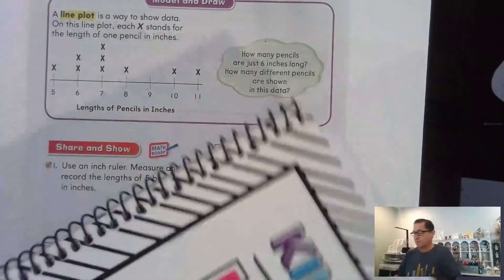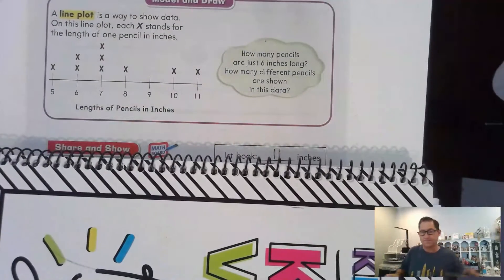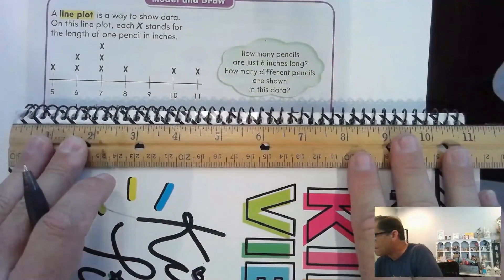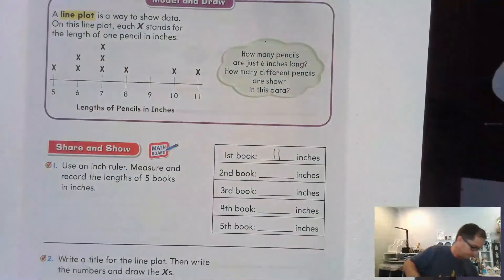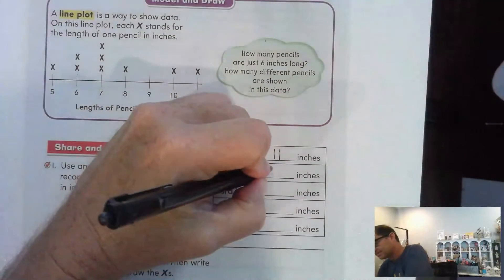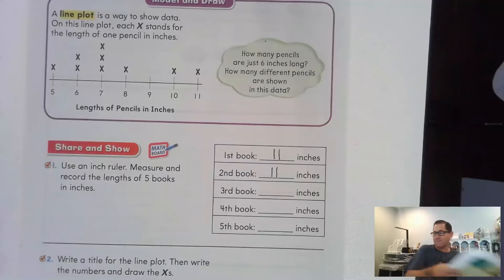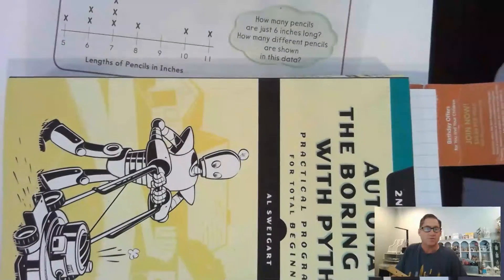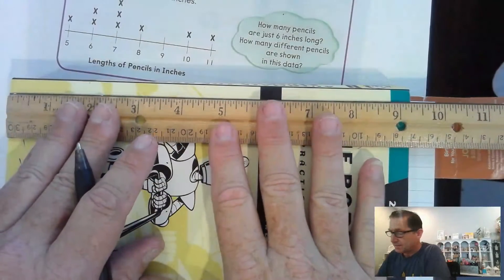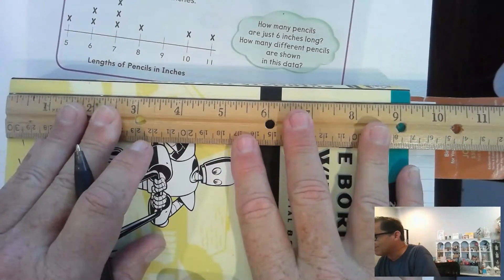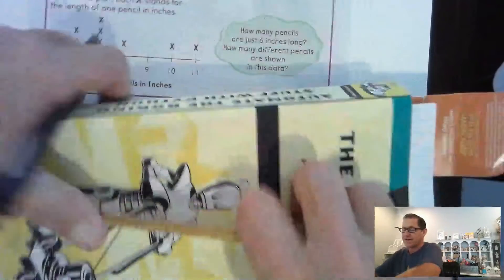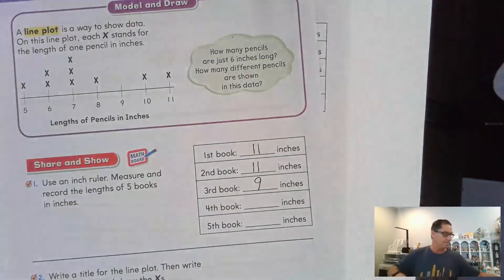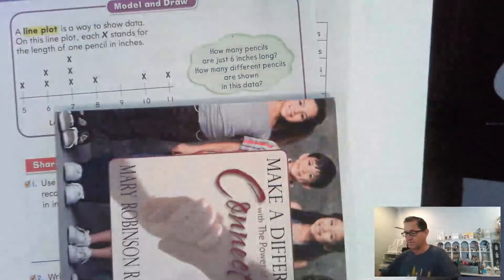My second book is my plan book — that's also 11 inches. My third book is a programming book, and this one is just short of nine and a half, so I'm going to call it nine inches. The fourth book is just a book I've been reading.